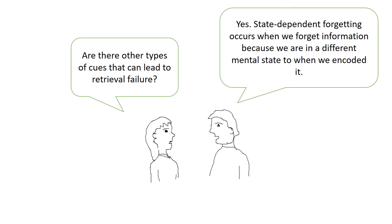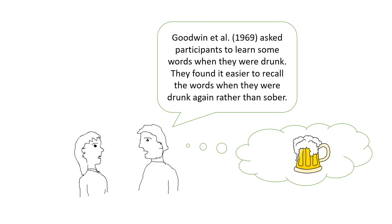So are there other types of cues that can lead to retrieval failure? Yes, there are state cues. State-dependent forgetting occurs when we forget information because we are in a different mental state to when we encoded it. Goodwin et al. asked participants to learn some words when they were drunk. They found it easier to recall the words when they were drunk again rather than sober. So this is an example of state-dependent memory.